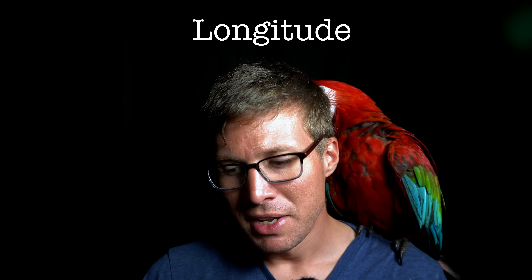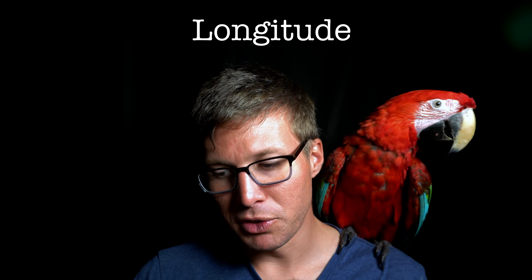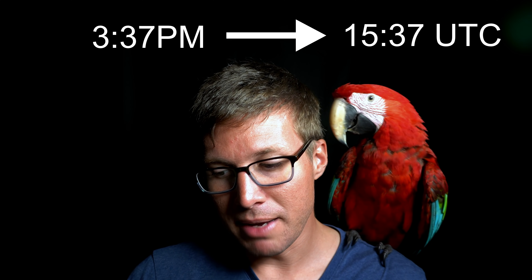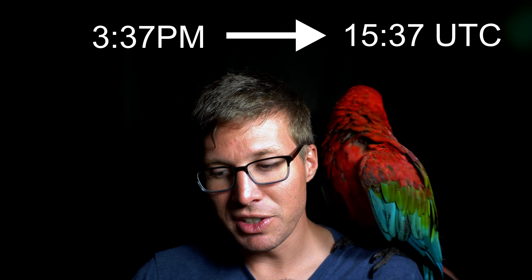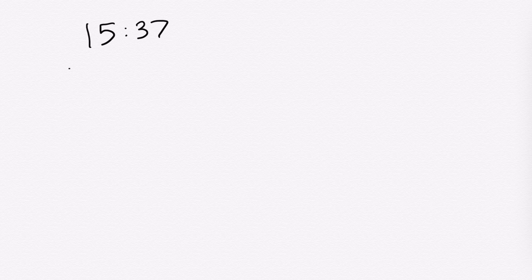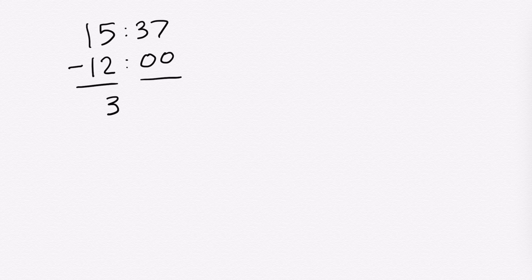Let's find our longitude. The time that your local apparent noon happened was 3:37 p.m. When we transfer that into 24-hour time, we get 15:37 UTC. Now you're going to take this time and subtract 12 o'clock — noon. That finds your time difference from UTC. So 15:37 minus 12:00 gives us a time difference of 3:37 from our local apparent noon to Greenwich Mean Time's noon.